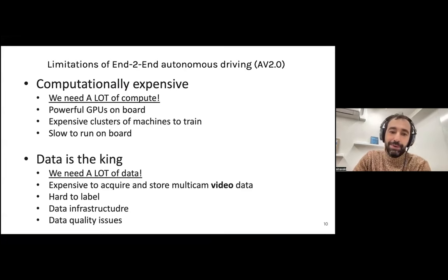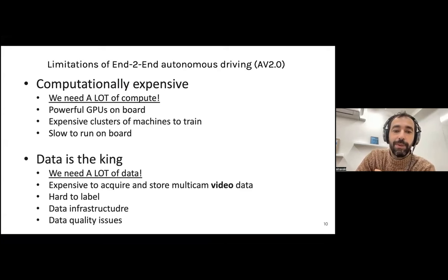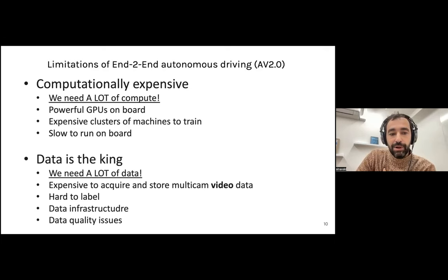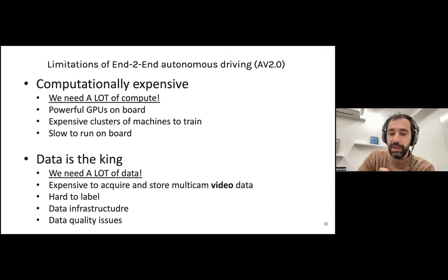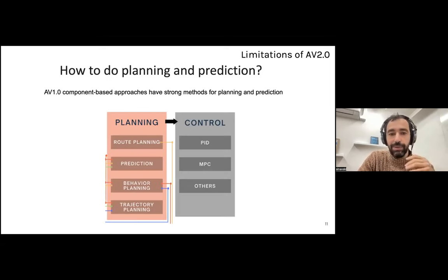But there are limitations. First, it's computationally expensive — we need a lot of compute, very powerful GPUs on board, and expensive clusters of machines to train everything. That approach also requires a lot of data — data is king. We need a special team to deal with data, acquire and store multi-cam video data, handle labeling, data infrastructure, and so on.